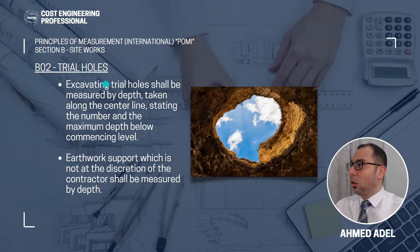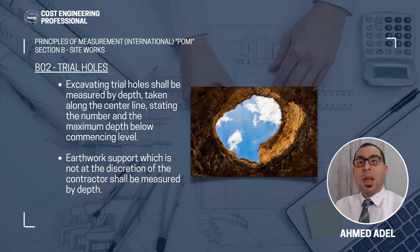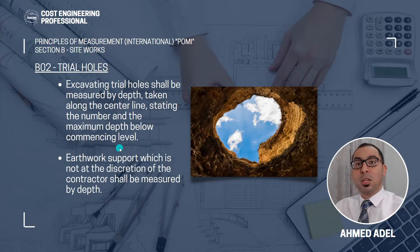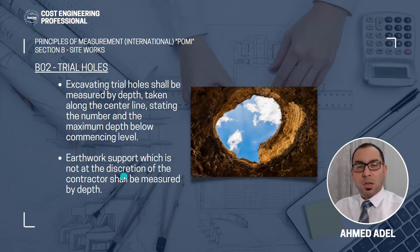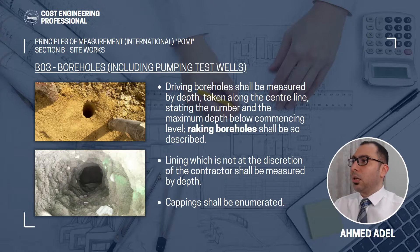The second subsection is trial holes. Excavating trial holes shall be measured by depth in linear meters, taken along the centre line, stating the number and the maximum depth below commencing level. You have to mention the depth of the trial hole and from which level you are excavating. Earthwork support which is not at the discretion of the contractor shall be measured by depth, and we have to keep an item for that in the BOQ.